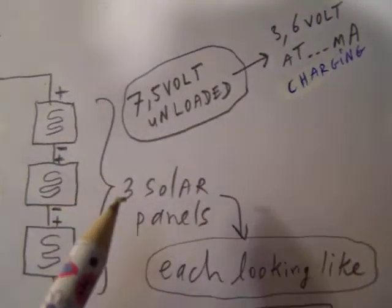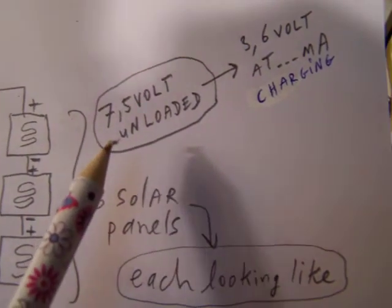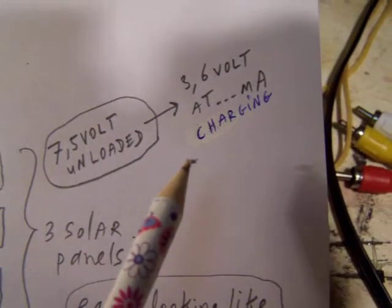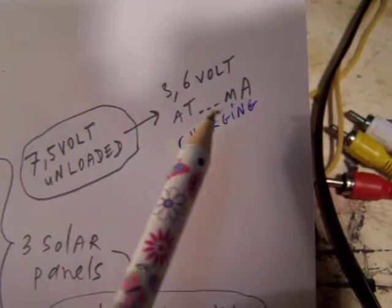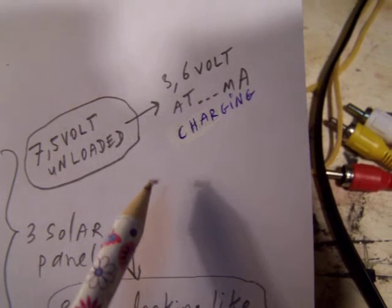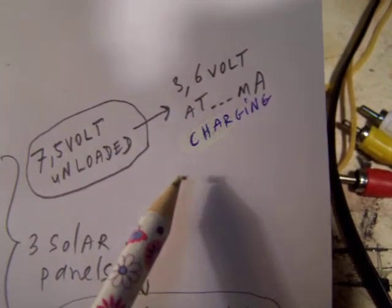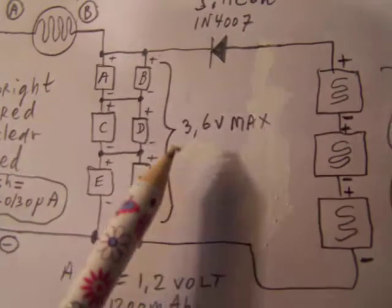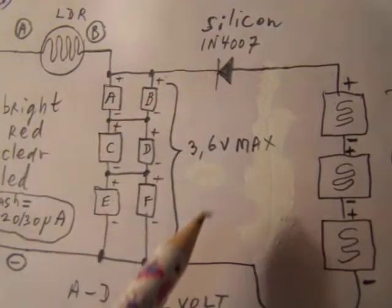The solar cells deliver 7.5 volts unloaded and they charge the batteries at 3.6 volts, so I think it's approximately 50 milliampere or 100 milliampere. That is the charge current into this battery pack.